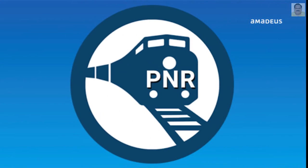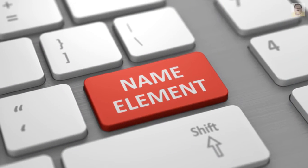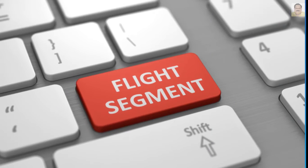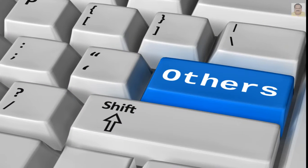PNR elements are divided into three categories. One is name elements. Second is flight segments. And third is others.